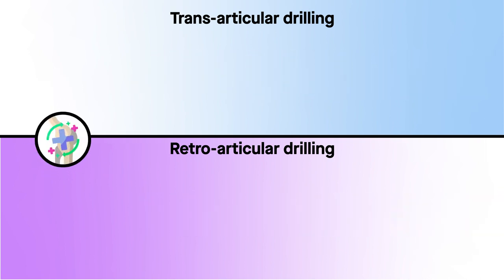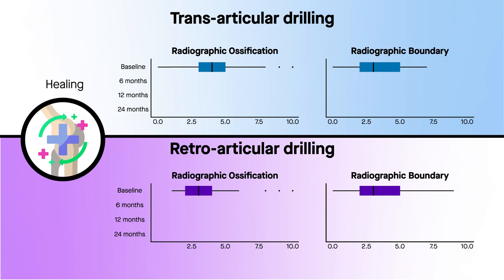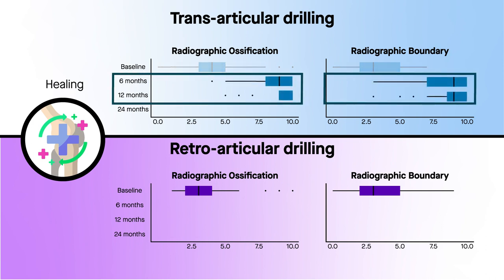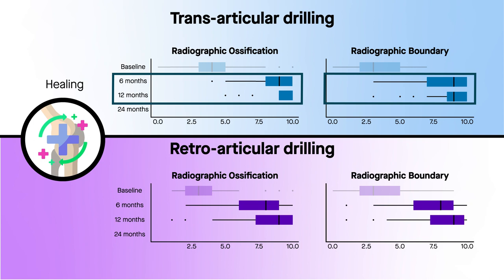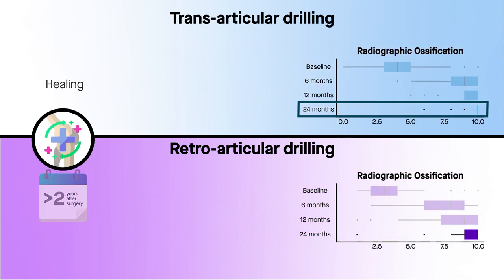A similar advantage was observed in healing parameters measured by radiographic imaging. At 6 and 12 months, patients in the transarticular group showed better median ossification and boundary scores than those in the retroarticular group. Interestingly, however, these differences did not persist at the two-year follow-up.